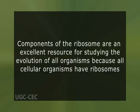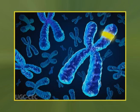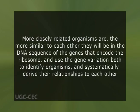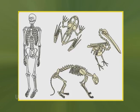The components of the ribosome are an excellent resource for studying the evolution of all organisms because all cellular organisms have ribosomes. The genes that encode the components of the ribosome originated in a common ancestor and may be directly compared. The more closely related organisms are, the more similar they will be in the DNA sequence of the genes that encode the ribosome — used both to identify organisms and to systematically derive their relationships. This is analogous to comparing skeletons in vertebrates: the more closely related organisms are, the more similar their skeletons will be.